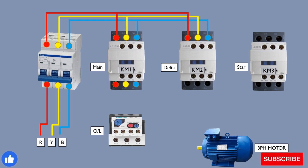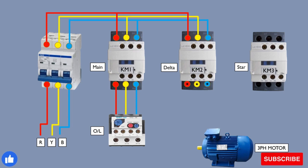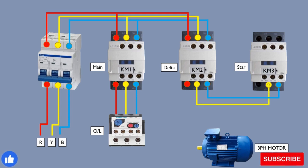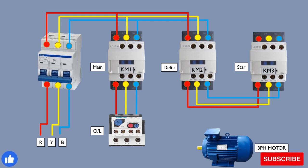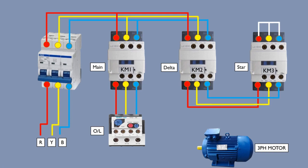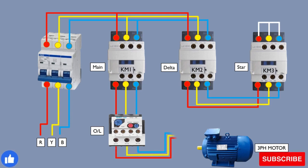From the output of the main contactor we make three connections to the overload relay, and also from the delta contactor to the star contactor from the output of the star. The other side of the star contactor will be looped to connect each other. Then we take the power from the overload relay to the motor, and also from the delta contactor to the motor.